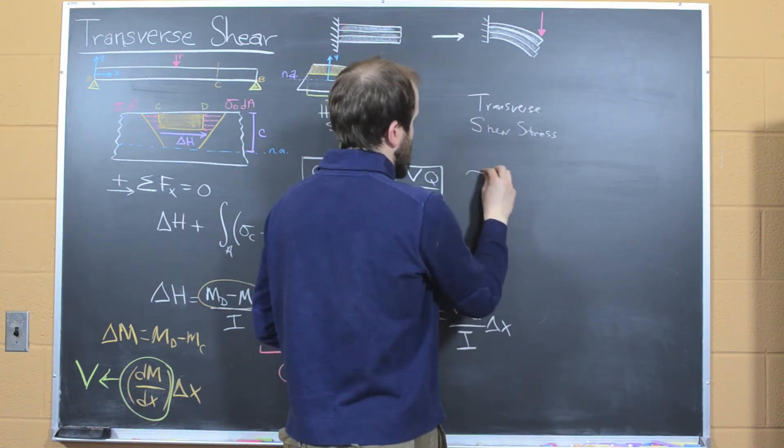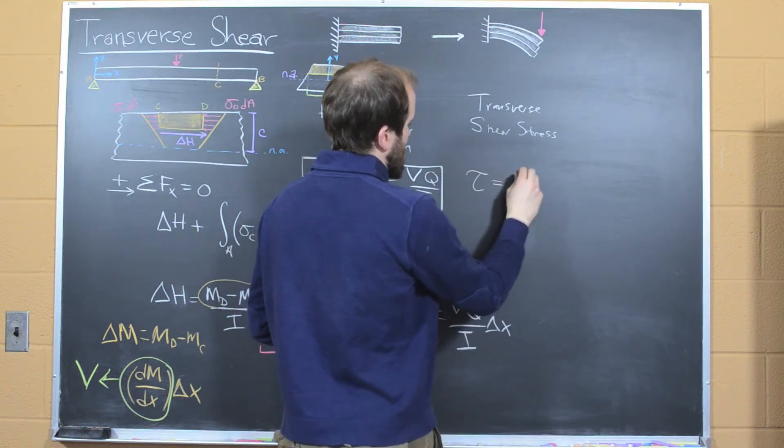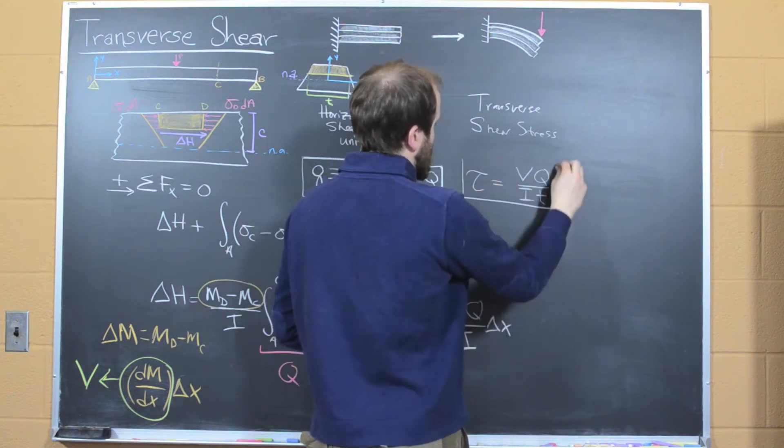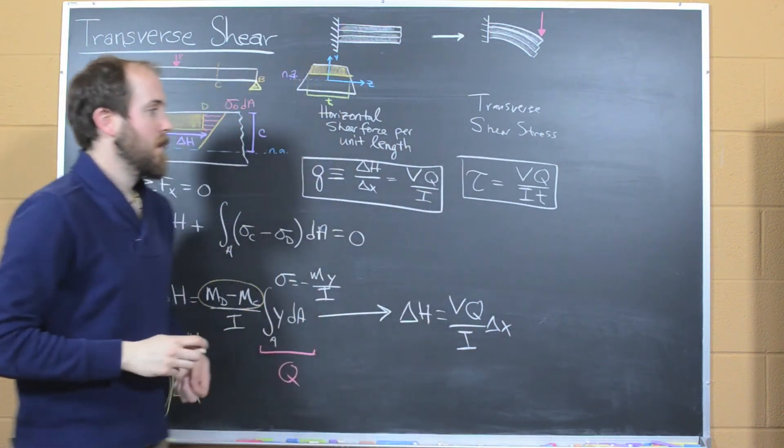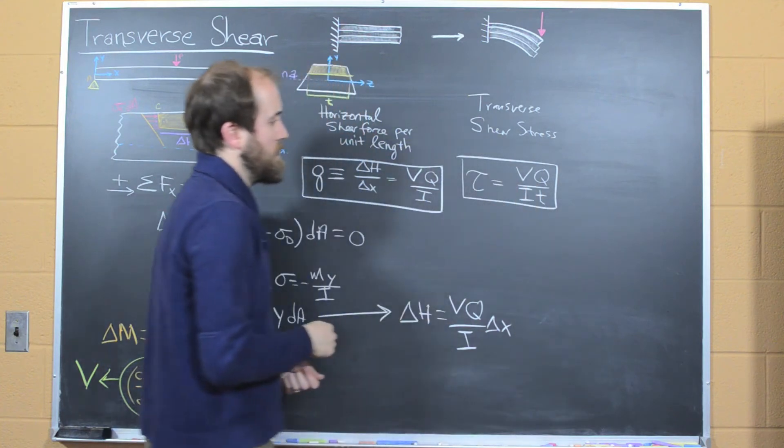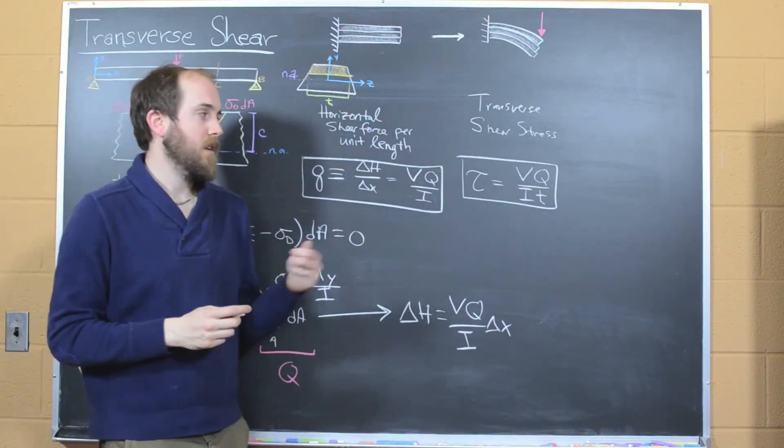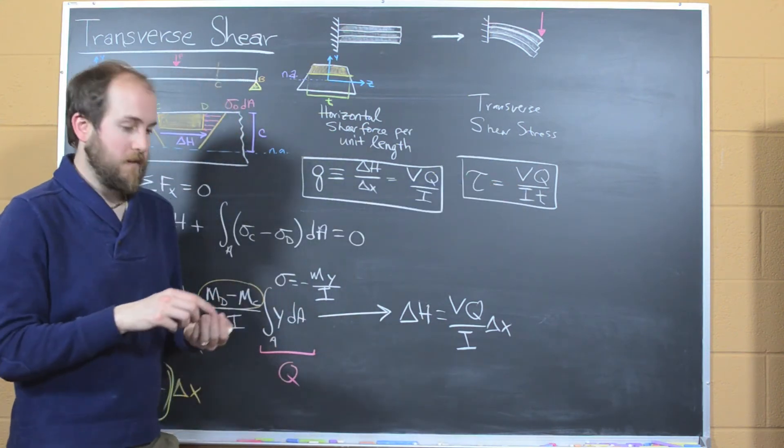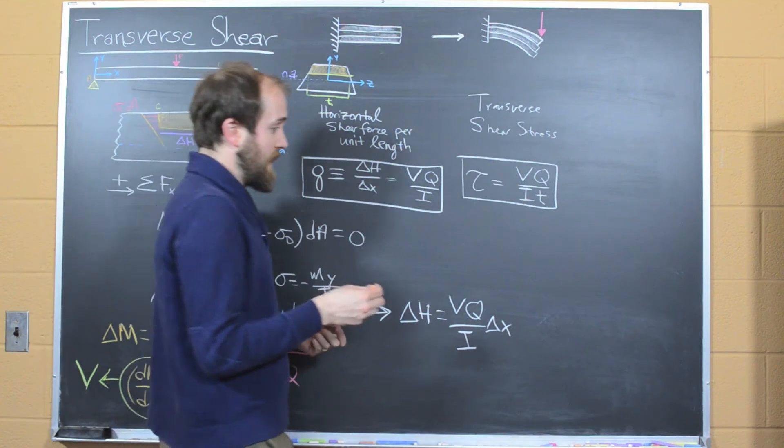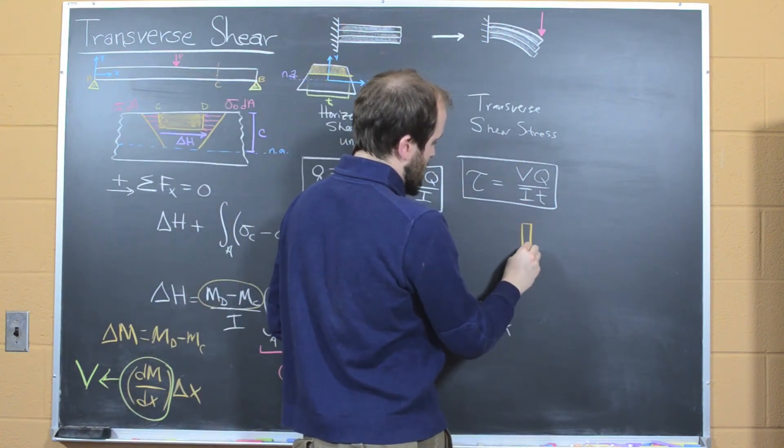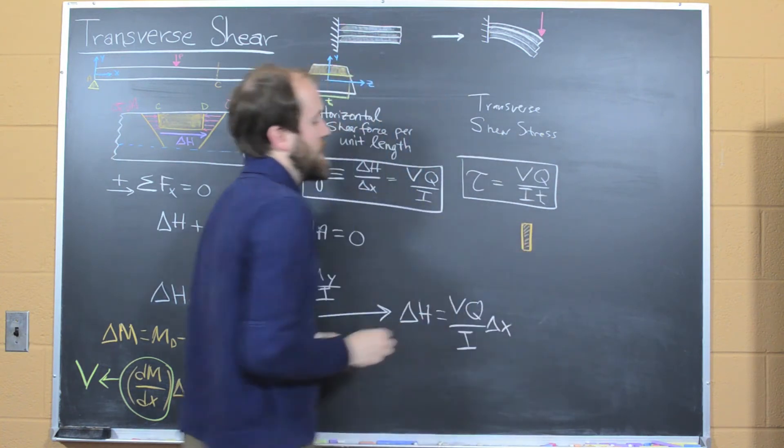And our transverse shear stress looks very similar. And it's going to be equal to VQ over It. As you start to work through problems, you'll see that calculating this is a bit cumbersome. And it'll take you some time to make sure you get everything right. There are some nice simplifications, which I'll point out very quickly. For two common structures, this can be simplified.